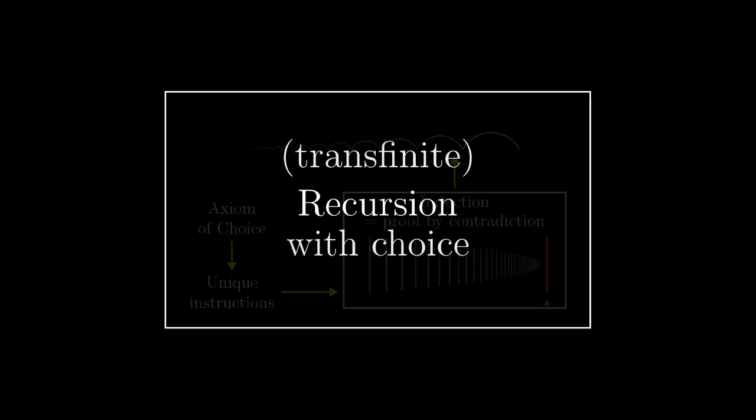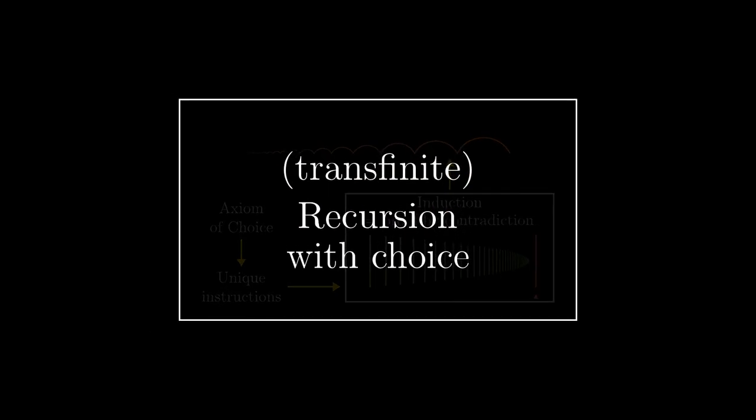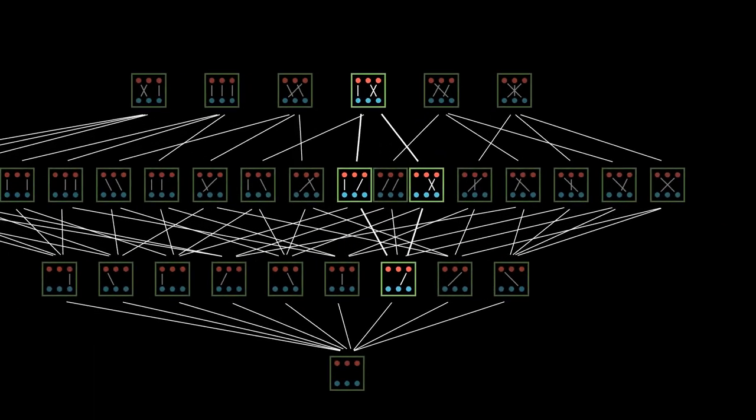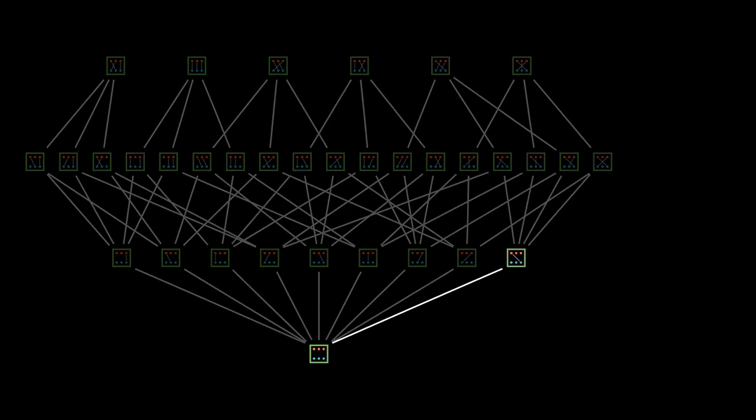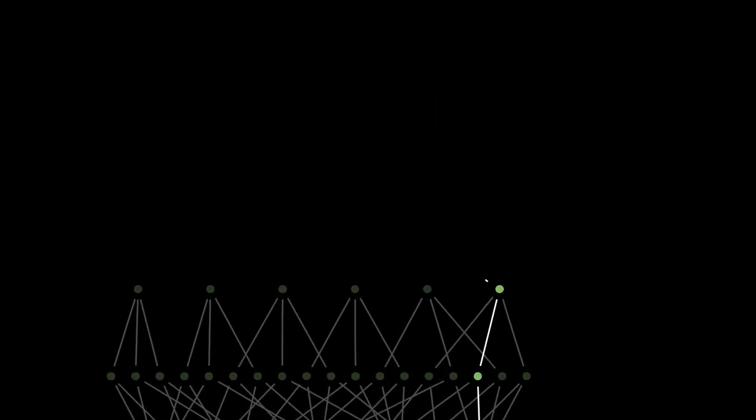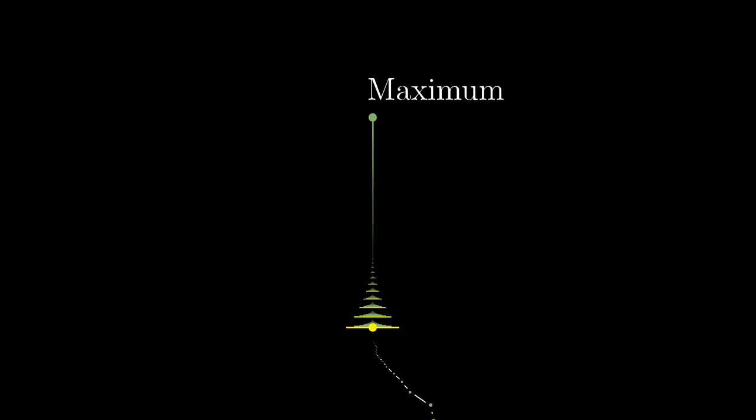This entire machine is called the transfinite recursion with choice and mathematicians typically use it without caring about the inside, since its usage is more intuitive than its formal meaning. But it is good to know that the transfinite recursion is not just built on sand. In the next chapter, we will see this machine in practice. We will be finally able to prove that every two sets are comparable and we will get famous set-theoretical tools known as Zorn's Lemma and the well-ordering principle. See you then!